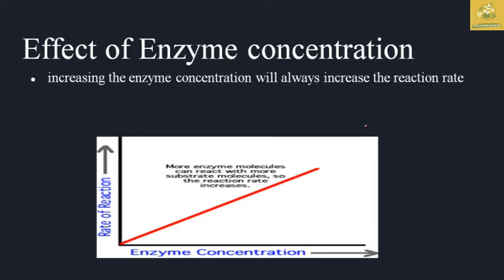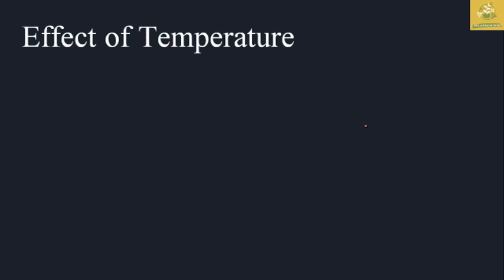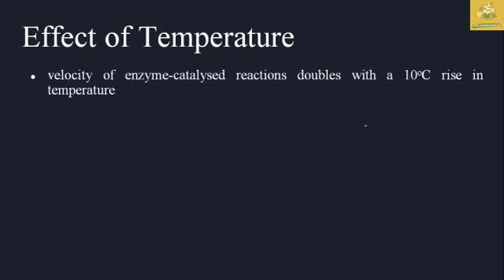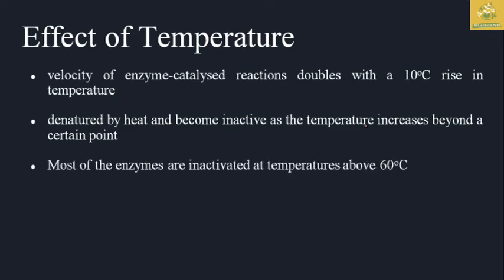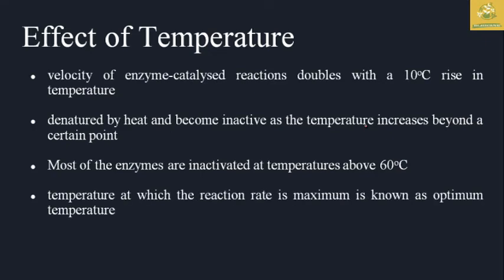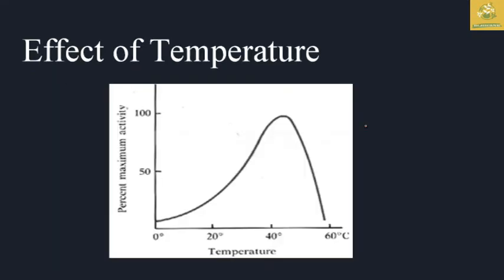The rate of reaction increases with enzyme concentration. Regarding the effects of temperature, the velocity of enzyme-catalyzed reactions doubles with every 10°C rise in temperature. However, enzymes are denatured by heat and become inactive as temperature increases beyond a certain point. Most enzymes are inactivated at temperatures above 60°C. The temperature at which reaction rate is maximum is known as the optimum temperature.